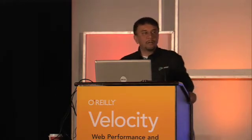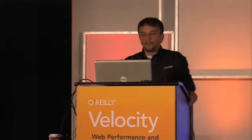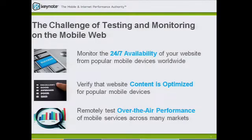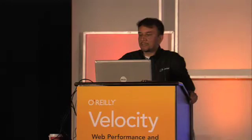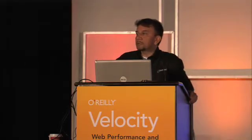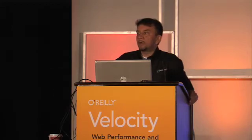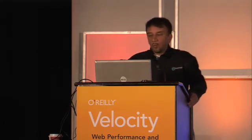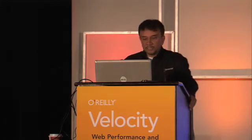The third big challenge is over-the-air performance. How do you remotely test over-the-air performance when you're connected to a particular mobile network, and you yourself are probably thousands of miles away from those markets? For example, if you're a major World Cup sponsor and you want your website accessible on a particular mobile device that's actually in South Africa, or Spain, or France — what's that experience going to look like? These are the three big challenges.